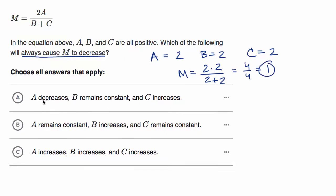Now let's do what they're saying. If A decreases, let's say that A equals one now. B remains constant, so B is still equal to two. And C increases, so now let's say C equals three. We're just trying out values that are consistent with what they're telling us. So now what is M? M is going to be equal to two times one over two plus three, which is equal to two over five.